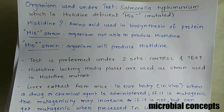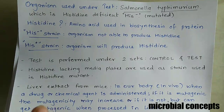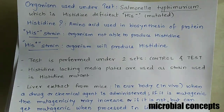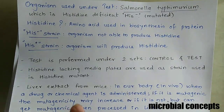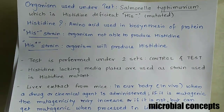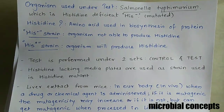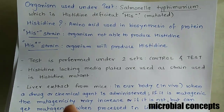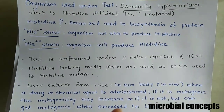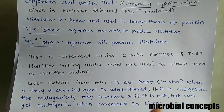We are also going to add liver extract from mice. The reason for using liver extract is that in vivo, inside our body, when we are administered with a drug or chemical agent, if it is mutagenic, the mutagenicity may increase when processed in our liver. Or even if it is not a mutagen before, it can happen that when it is processed in the liver, you can get a mutagenic effect.